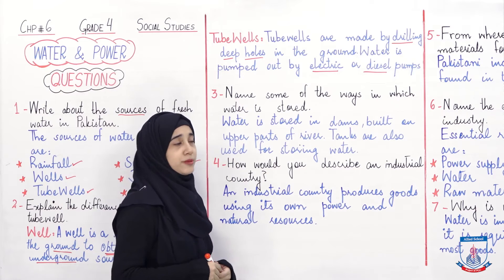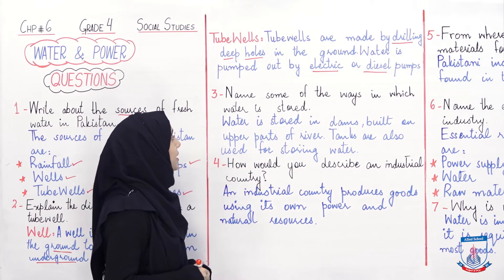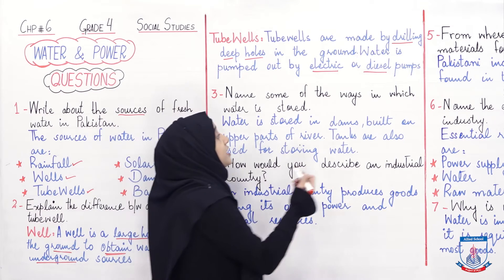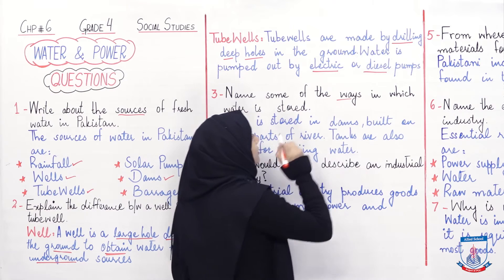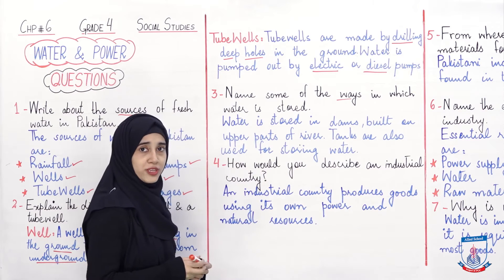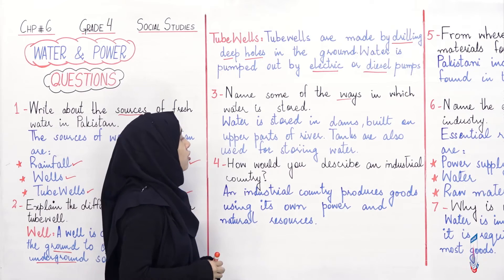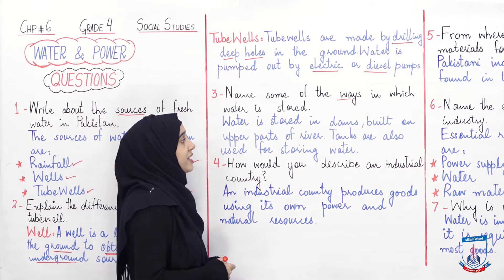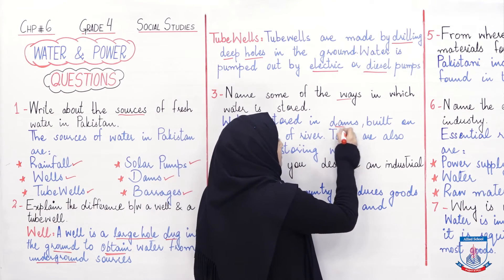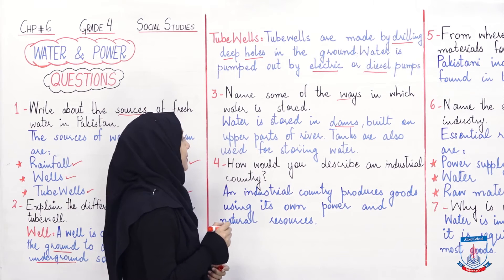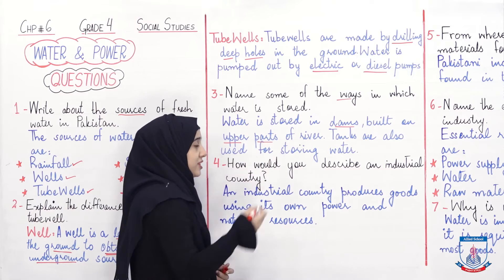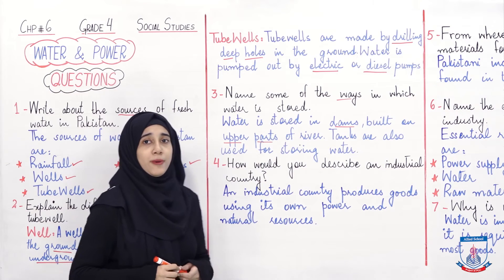Now, let's talk about question number 3: name some of the ways in which water is stored. So, water is stored in dams built on upper parts of river. Water kaha pe stored kiya jata hai? It is stored in dams. And where are dams built? They are built on upper parts of river.